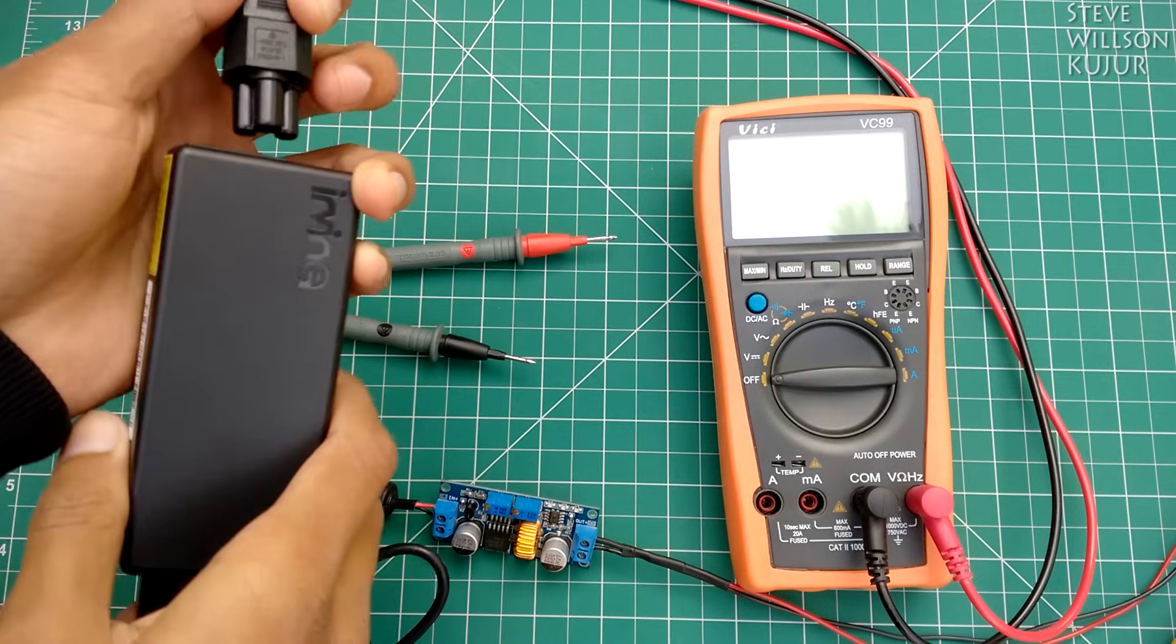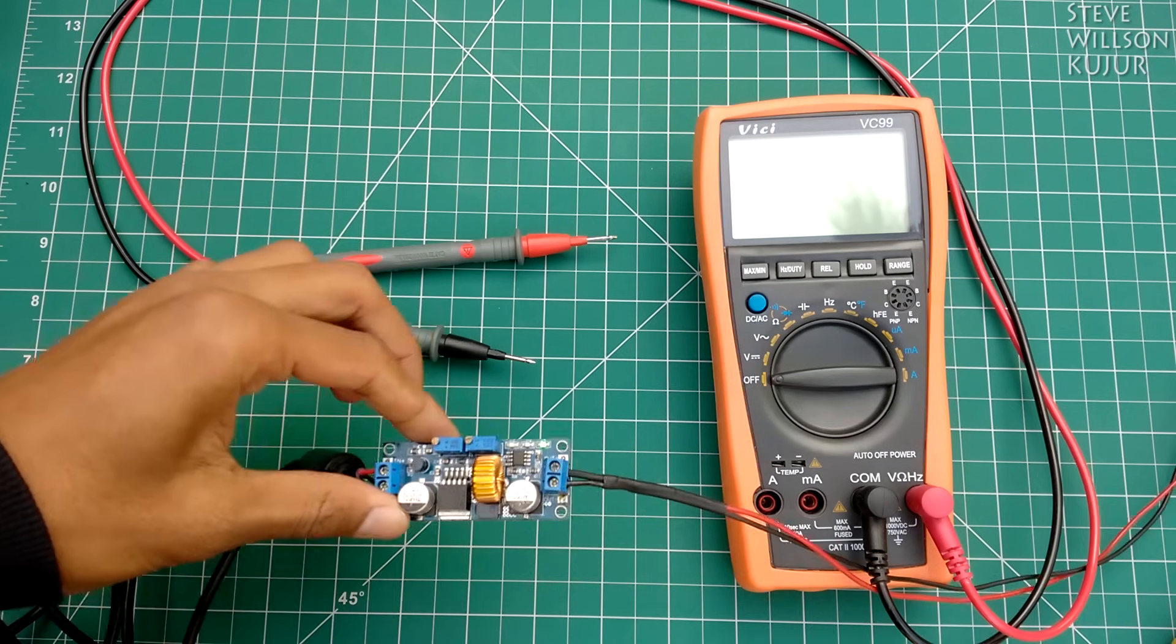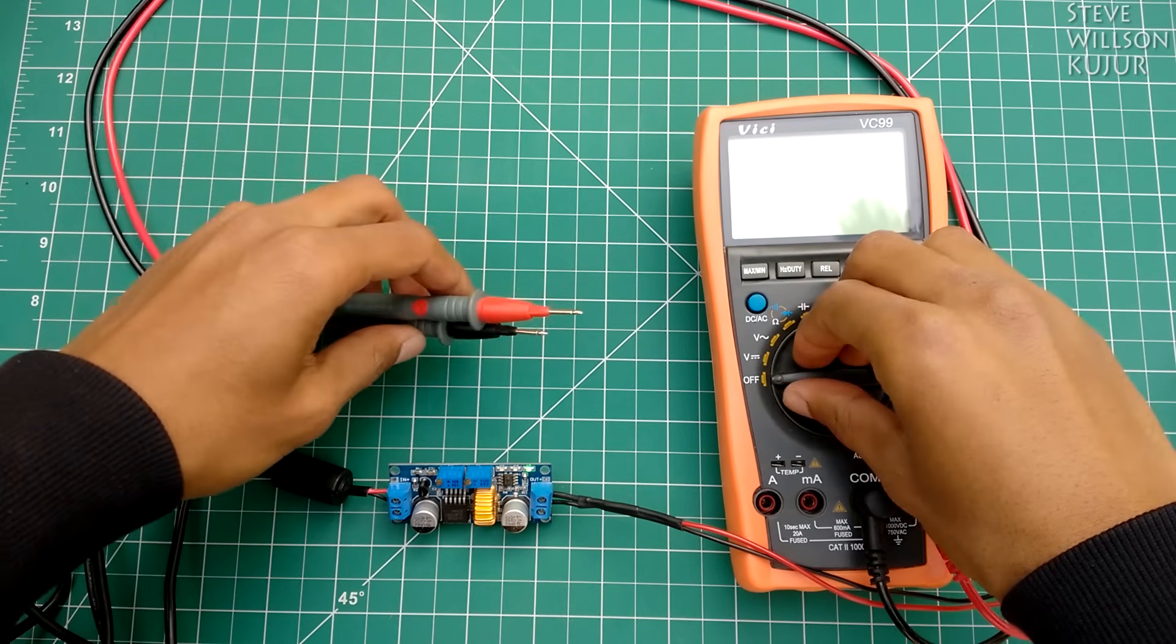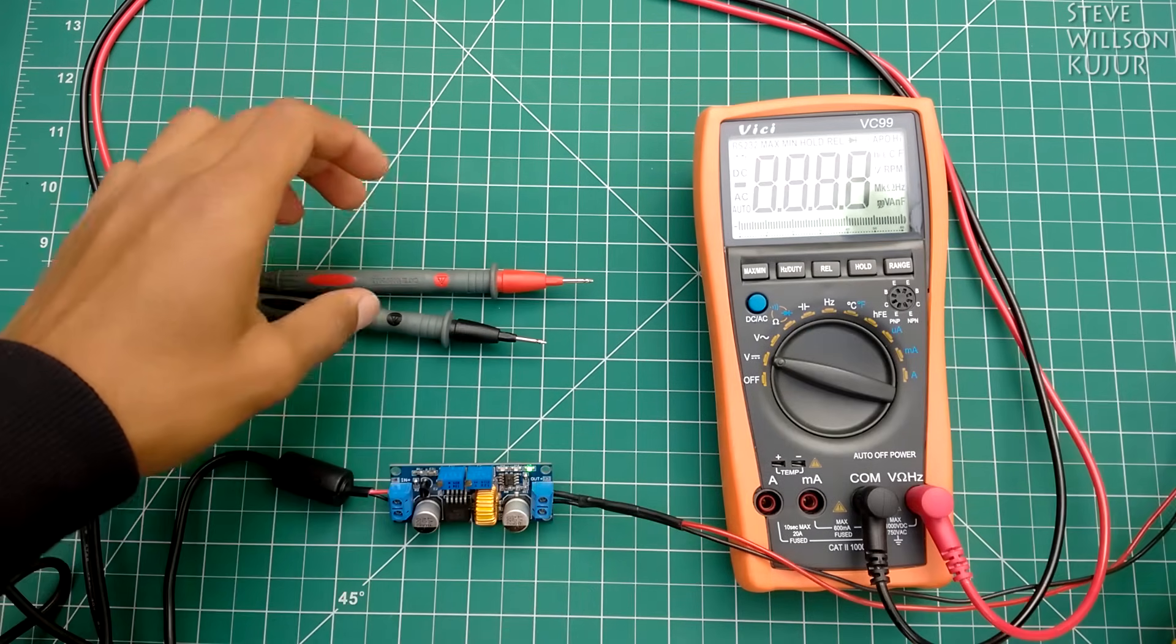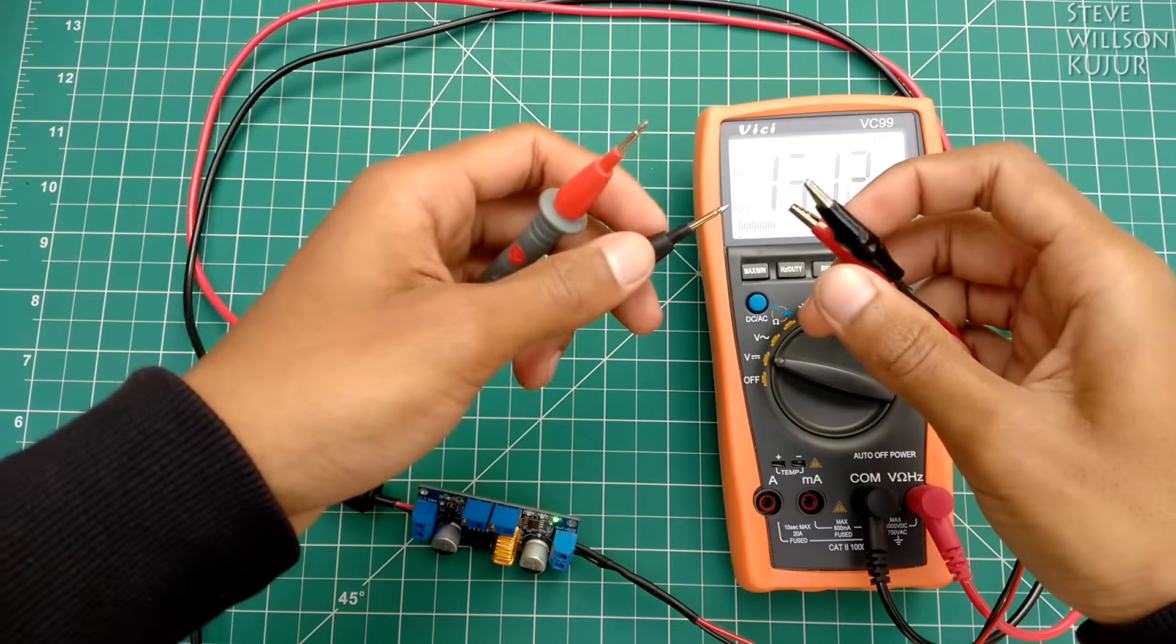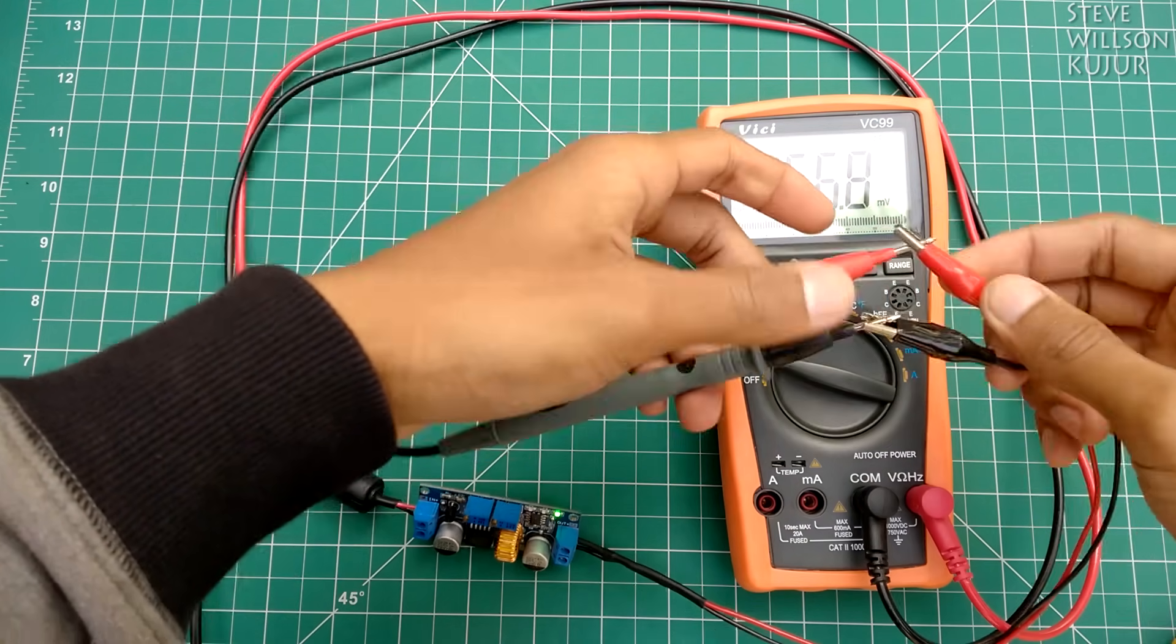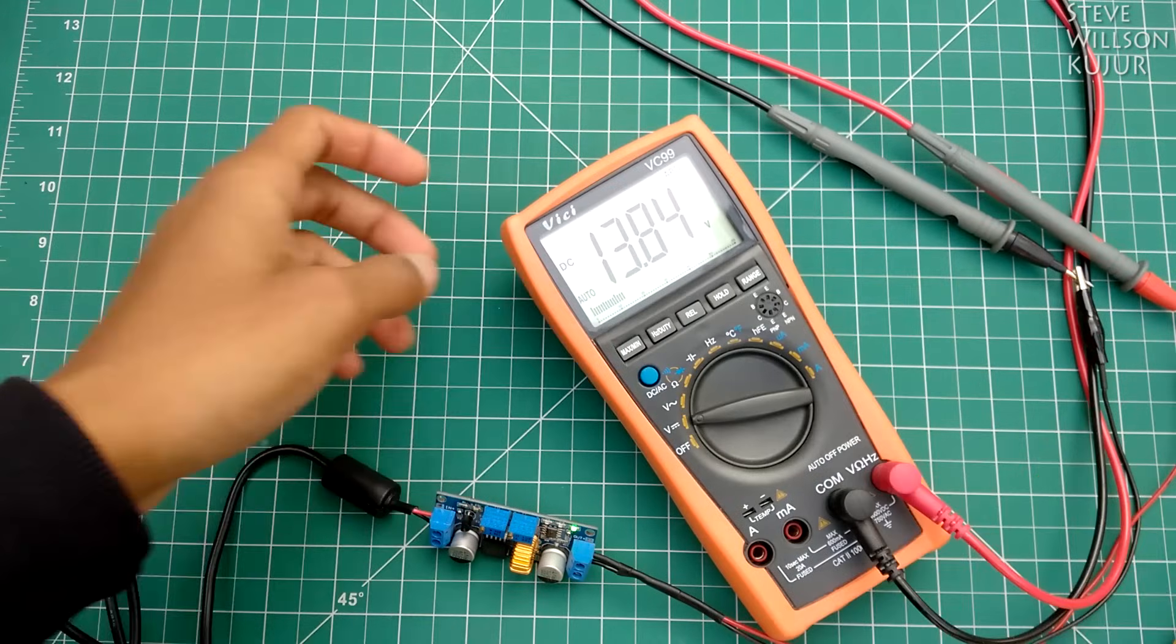Now plug your adapter to the main line. You will get a green LED over here. Now just turn on your multimeter to DC voltage. Now connect negative to negative and positive to positive of your multimeter.